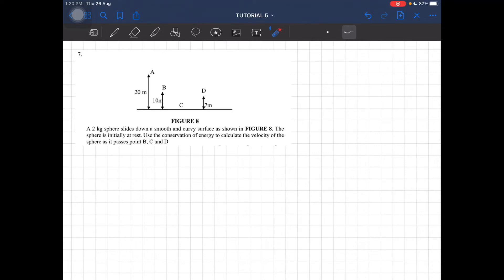Okay, so for question 7, a 2kg sphere slides down a smooth and curvy surface. The sphere is initially at rest. Use the conservation of energy to calculate the velocity of the sphere as it passes point B, C and D.